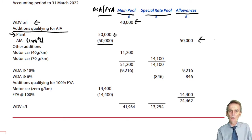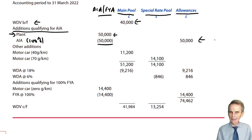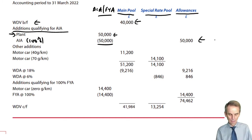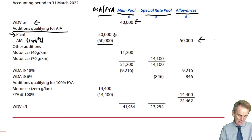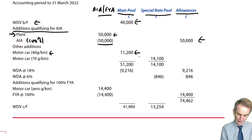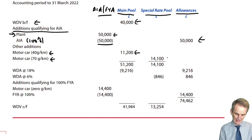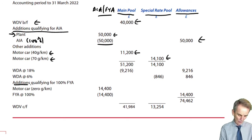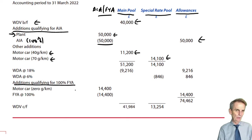We then list out those cars that will qualify for writing down allowance — remember, there's never AIA for cars. We've got two cars that will rank for WDA: the lower emissions car allocated to the main pool and the higher CO2 emissions car allocated to the special rate pool. The one with zero CO2 emissions is dealt with last of all on this computation after the WDA has been computed, as additions qualifying for 100% FYA.